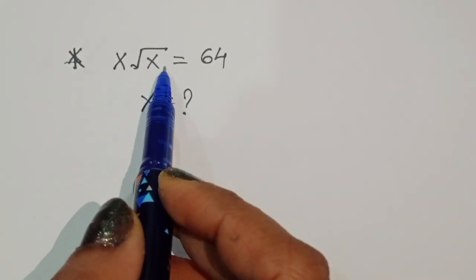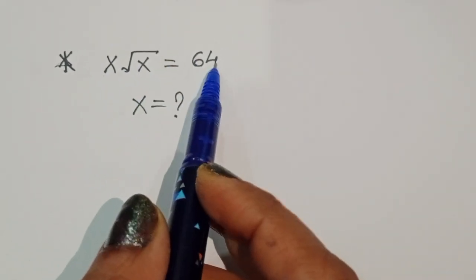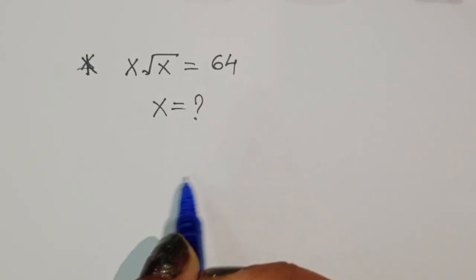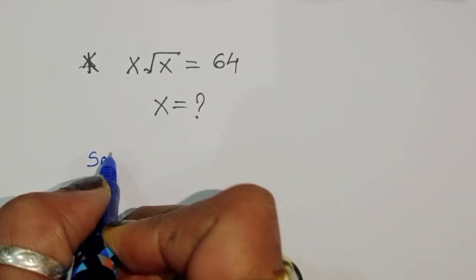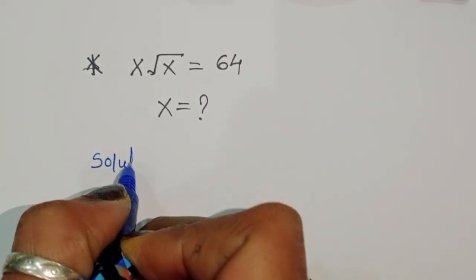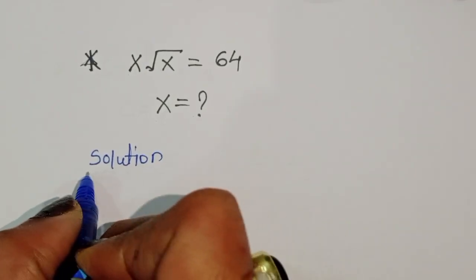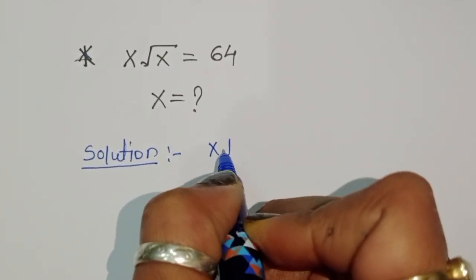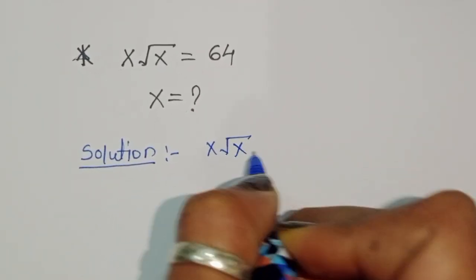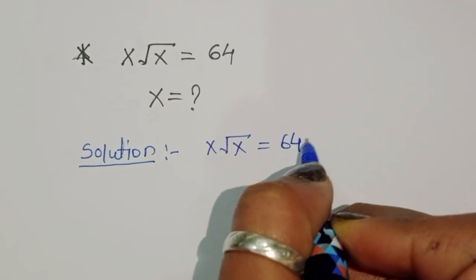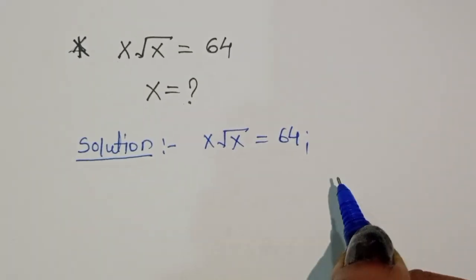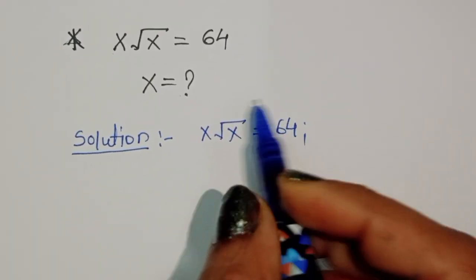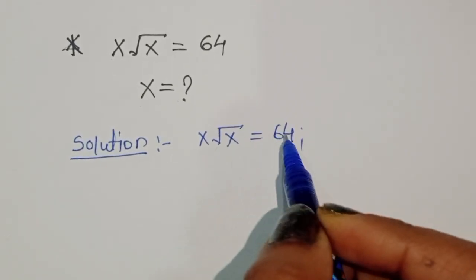Given x times square root of x is equal to 64, we have to find out the value of x. Let's see the solution. x times square root of x is equal to 64. We have to cancel this square root.